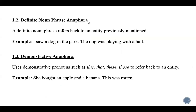The second type is definite noun phrase anaphora, where a definite noun phrase refers back to an entity previously mentioned. For example, in 'I saw a dog in the park; the dog was playing with a ball,' the phrase 'the dog' refers back to 'a dog.'